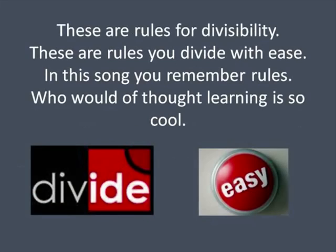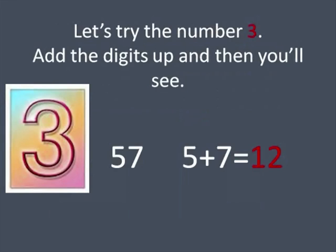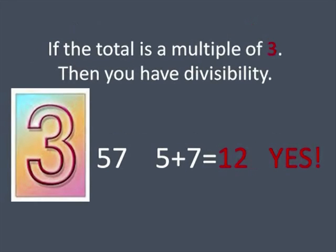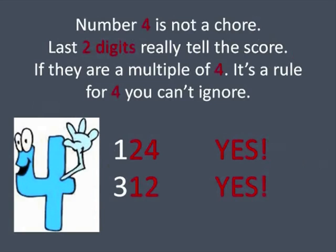These are rules for divisibility. These are rules you divide with ease. In this song you remember rules. Buddha thought learning is so cool. Let's try the number three. Add the digits up and then you'll see. If the total is a multiple of three, then you have divisibility.